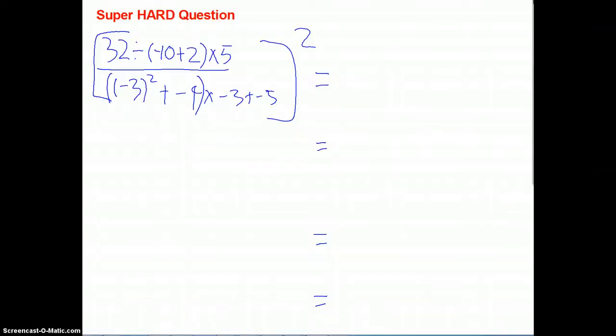Now we're going to do a super hard question about integers. 32 divided by negative 10 plus 2, close in parentheses, times 5, divided by parentheses, parentheses, negative 3 squared, plus negative 4, parentheses, times negative 3, plus negative 4.